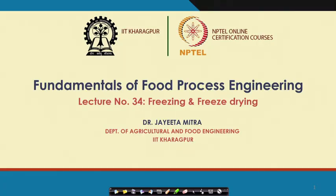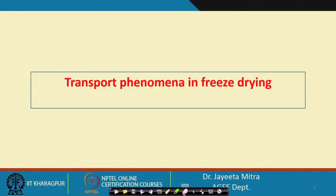Hello everyone, welcome to the NPTEL online certification course on fundamentals of food process engineering. We will continue with the topic of freeze drying today. We have seen in the last class that the basic idea behind freeze drying is that we need to perform it below the triple point of water, that is below 611.73 Pascal pressure and 0.01 degree Celsius temperature.